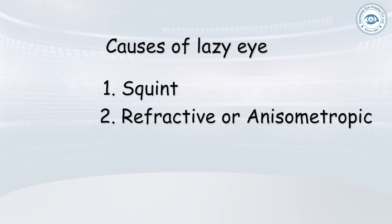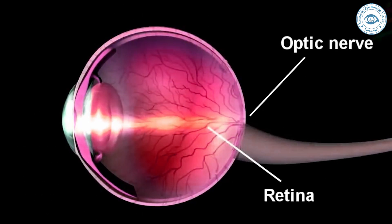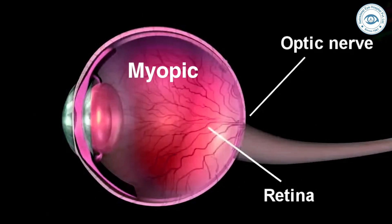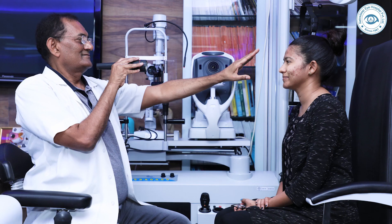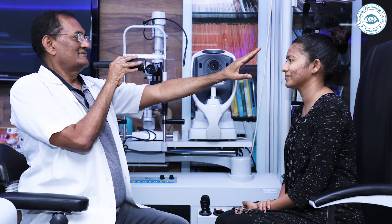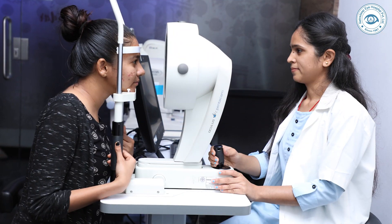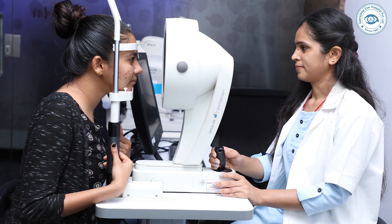The second cause is refractive or anisometropic amblyopia, where one or both eyes cannot focus a clear image to the retina — that is, one or both eyes may be myopic, hyperopic, or astigmatic. This is the most common type of lazy eye seen in the OPD and is mostly an accidental finding during routine checkup.